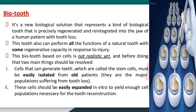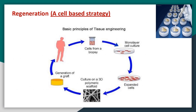This bio-tooth based on cells is not realistic yet. Before achieving it, two main things must be resolved. First, cells that can generate teeth — called stem cells — must be easily isolated from older patients, who are the major population suffering from tooth loss. Second, these cells should be easily expanded in vitro to yield enough cell populations necessary for tooth reconstruction.